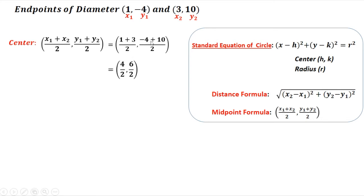For the y-coordinate: (-4 + 10) = positive 6, then divided by 2. Reducing, 4/2 = 2 and 6/2 = 3. So the center of the circle is (2, 3), because we know that the diameter always passes through the center of the circle.